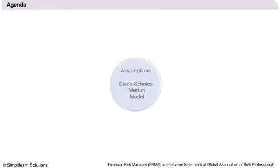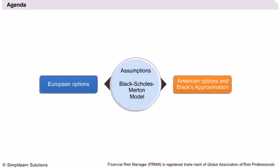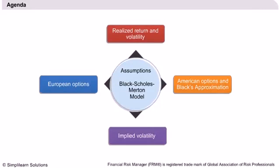The Black-Scholes-Merton Model will be the main agenda of our discussion. We will first begin by discussing stock price and return distributions. We will then discuss the assumptions underlying the model. We will then learn to compute the European option using this model. We will also see how Black's approximation can be used to evaluate American options that pay dividends. Finally, we will end the session by deriving the value of the volatility implied by the market value of the option using the same Black-Scholes-Merton Model.